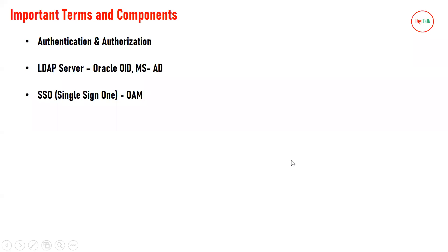The important terms and components with respect to identity management: the first is authentication and authorization. When we access any protected website we enter our username and password, which gets authenticated from a back-end LDAP server or maybe credentials stored in a database. That is called authentication — when your username and password are verified. The second term is authorization, which means the resources or applications where you have access.